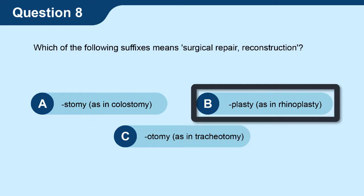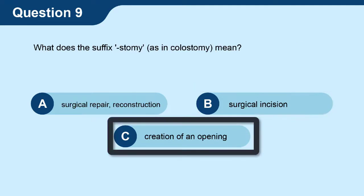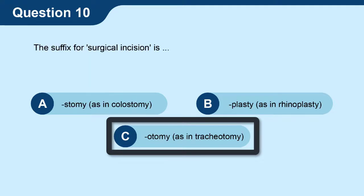Question 8: Which of the following suffixes means surgical repair or reconstruction? Answer: B — -plasty, as in rhinoplasty. Question 9: What does the suffix -stomy, as in colostomy, mean? Answer: C — creation of an opening. Question 10: The suffix for surgical incision is? Answer: C — -otomy, as in tracheotomy.